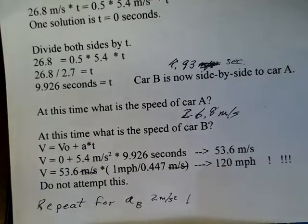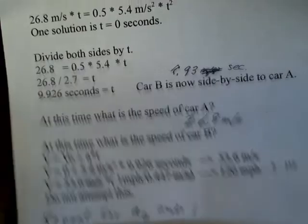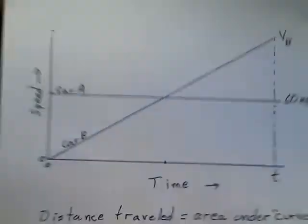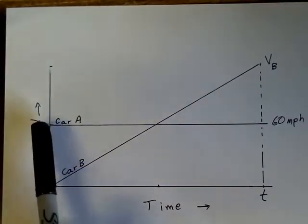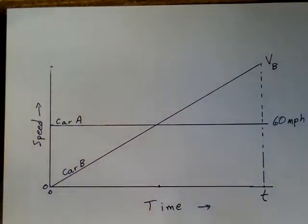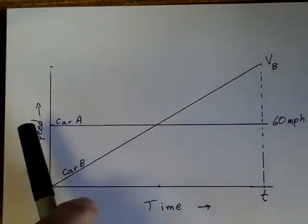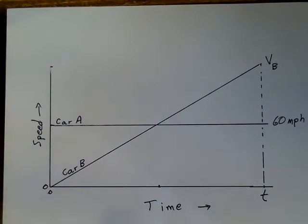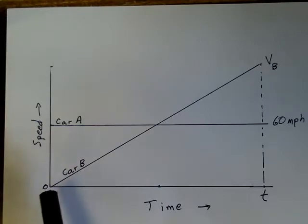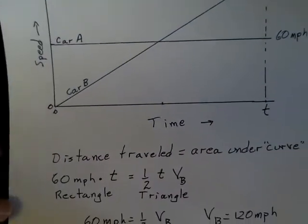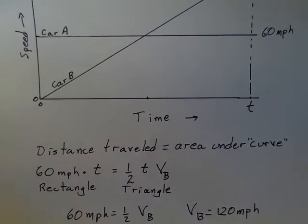So we have the two cars here. Car A is the constant 60 miles per hour. Car B is accelerating. And the acceleration is constant. So the graph of speed versus time, velocity versus time, is a straight line.